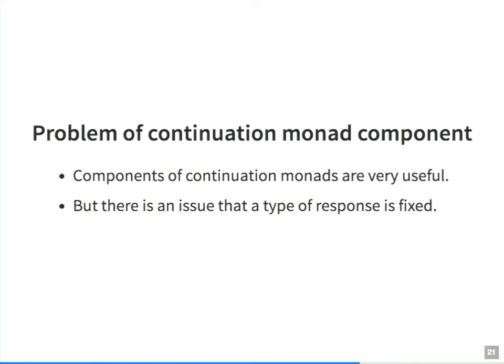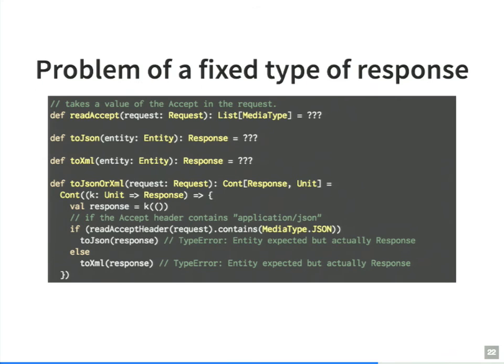Components of continuation monads are very useful, but there is an issue: the type of response is fixed. For example, consider components that transform the response to JSON or XML according to the Accept header in the request. In the code, the readAccept function reads the Accept header, and toJSON or toXML functions transform the response. But we cannot compile this code because the toJSON function and the continuation monad have different result types.